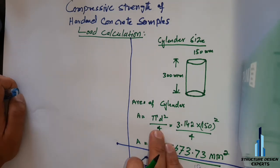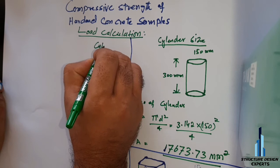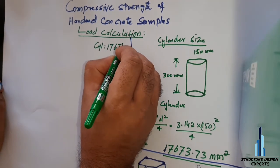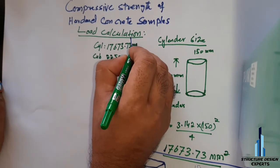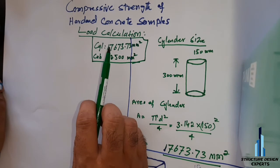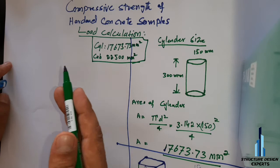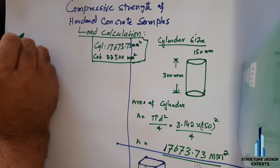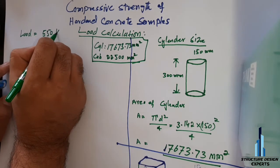The machine always gives the load value in kilonewtons. So we write the area of the cylinder and the area of the cube accordingly. When we place the cylinder in the machine and crush it, the machine gives one value in kilonewtons. For example, the load is equal to 500 kilonewtons after seven days.